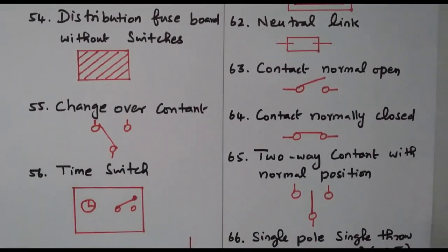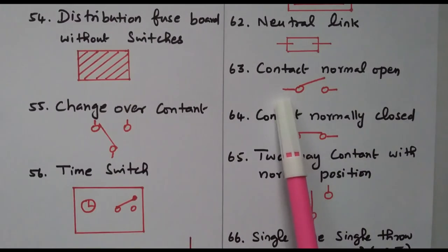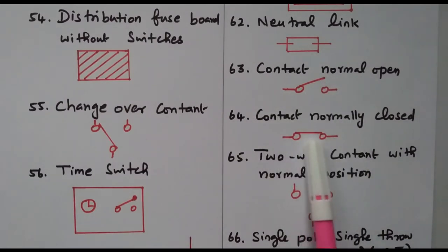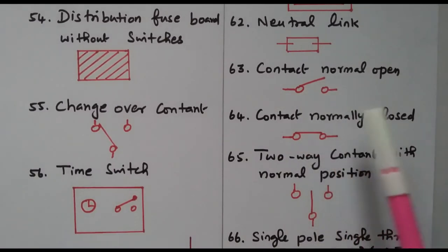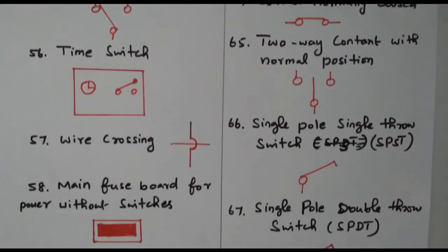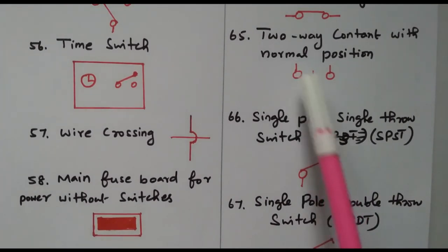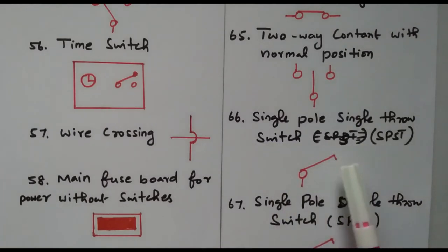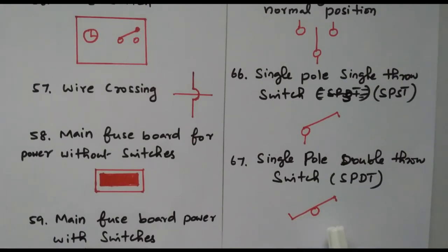Then we have neutral link, indicating the neutral is available. Contact normally open means it is in open condition normally; closed means it is in closed condition. A normally open contact is open under normal conditions and closes under abnormal conditions. Then two-way switch connects to either this end or that end. Single pole single throw has one pole and one throw. Single pole double throw has one switch that can connect to either side.